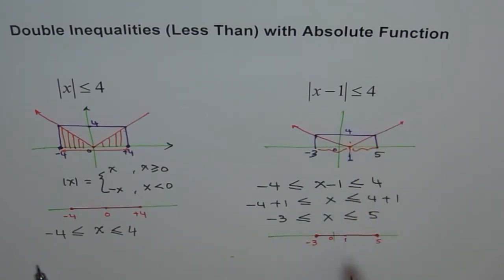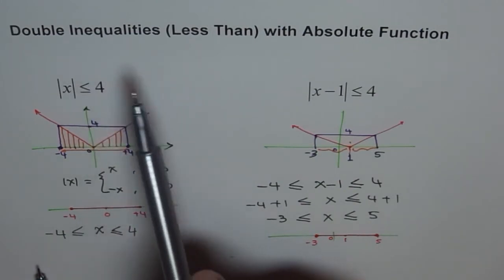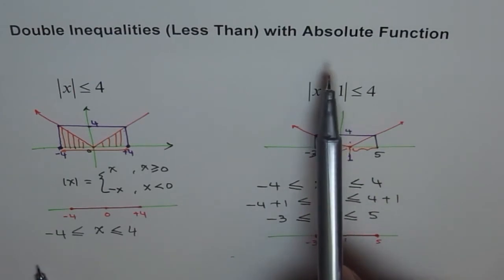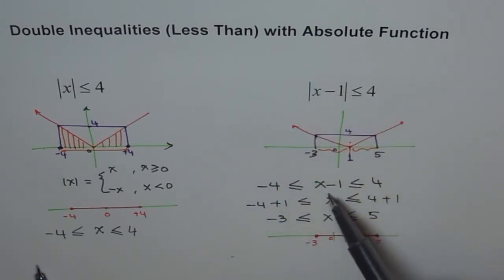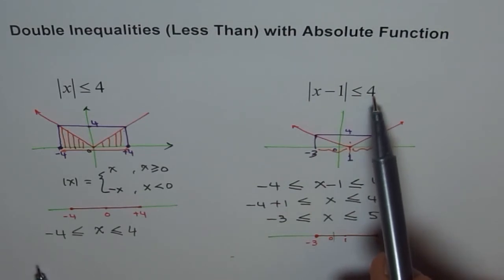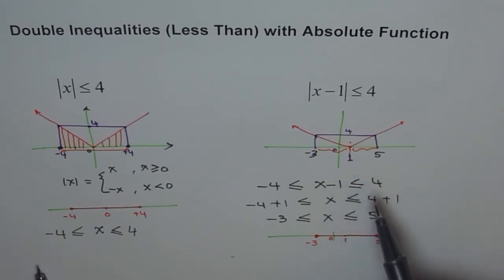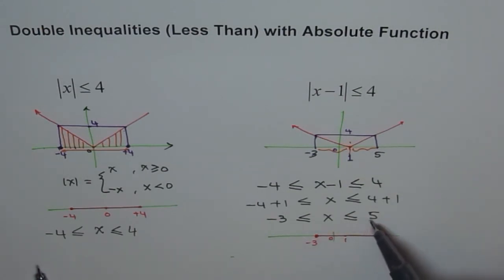Whenever we have a double inequality — a less-than type in an absolute function — we can always write it as a double inequality where the function is within plus and minus of these values, and then we can easily get our answer. I hope you understand the concept and appreciate the way it has been graphically shown. The answer can be written on a number line or as an inequality — both ways are correct. Thank you.